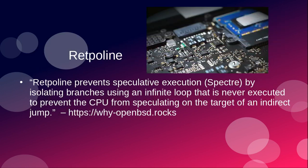Retpoline. This one kind of went over my head a little bit. I was trying to wrap my mind around it and explain it, but honestly the explanation on whyOpenBSD.rocks is so good I don't think I could word it any differently, so I'll just read it directly from there. Retpoline prevents speculative execution — Spectre — by isolating branches using an infinite loop that is never executed, to prevent the CPU from speculating on the target of an indirect jump.